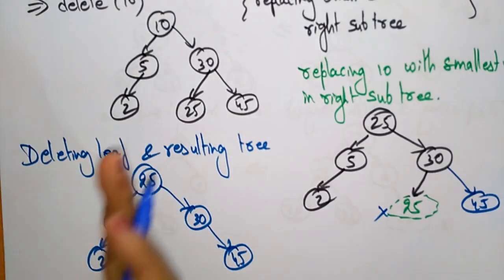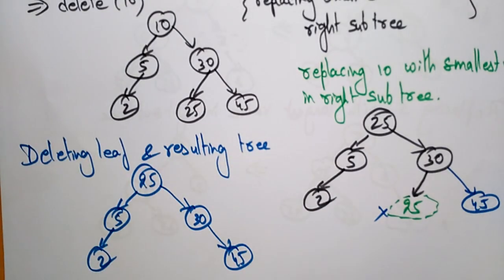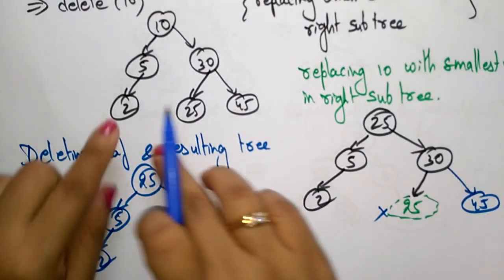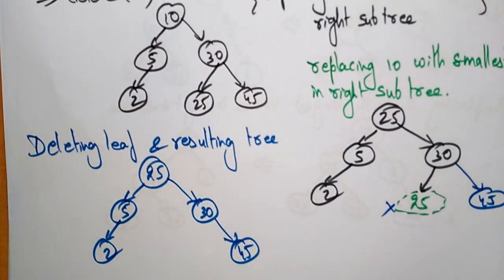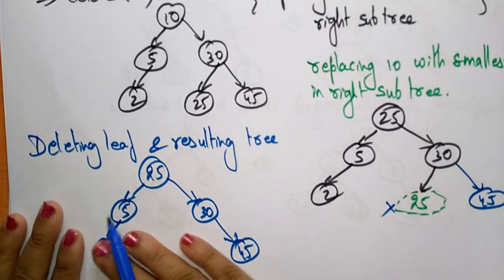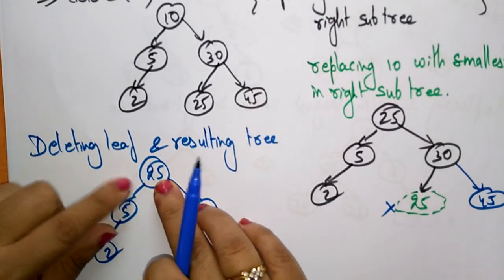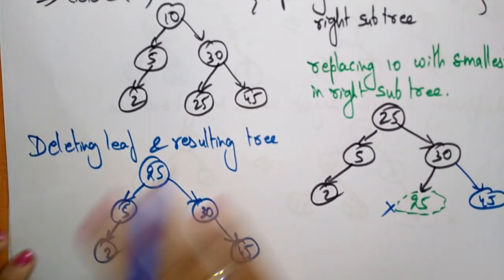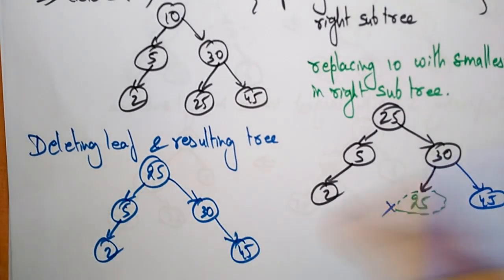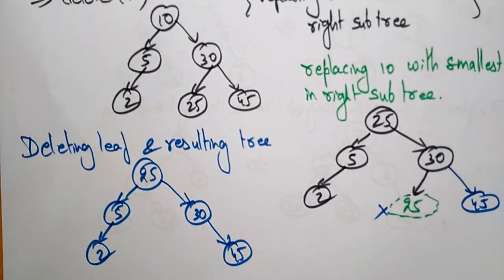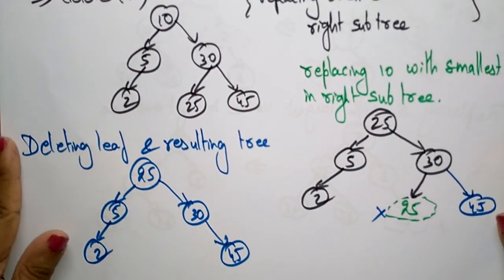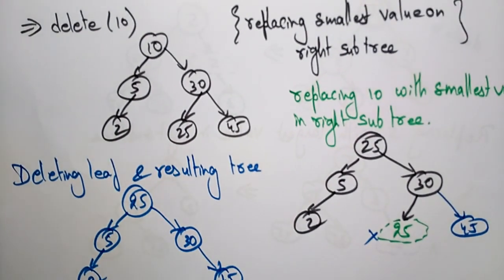So this is one more way of deleting: you can replace with the left side element or the right side element. If the deleting element is a leaf node, directly search and delete it. If it is not a leaf node — whether internal or root — replace it with the appropriate element from below. This is how you delete an element in a binary search tree. Thank you.